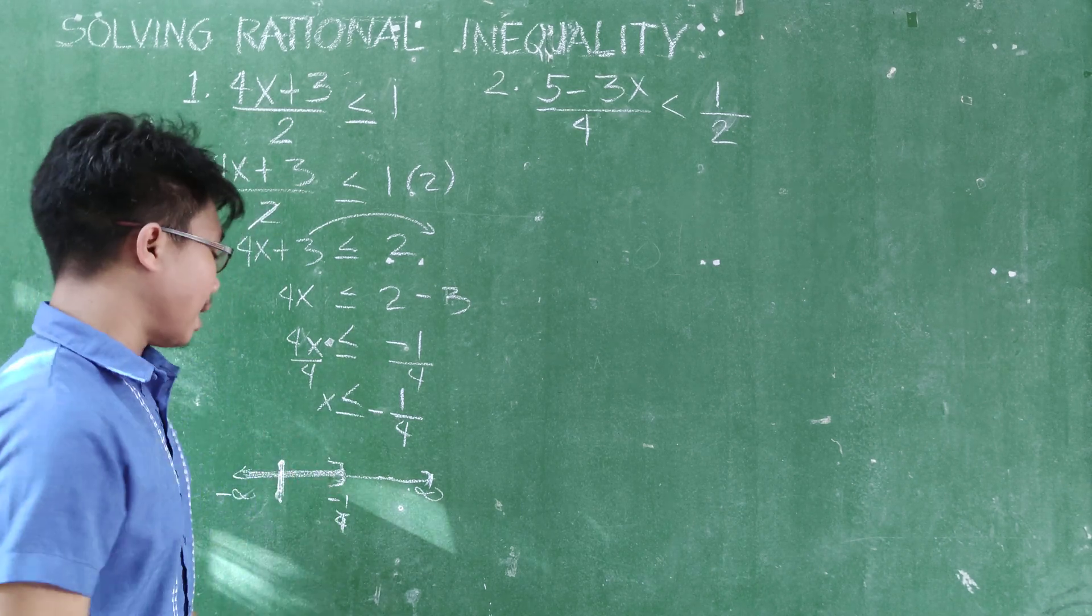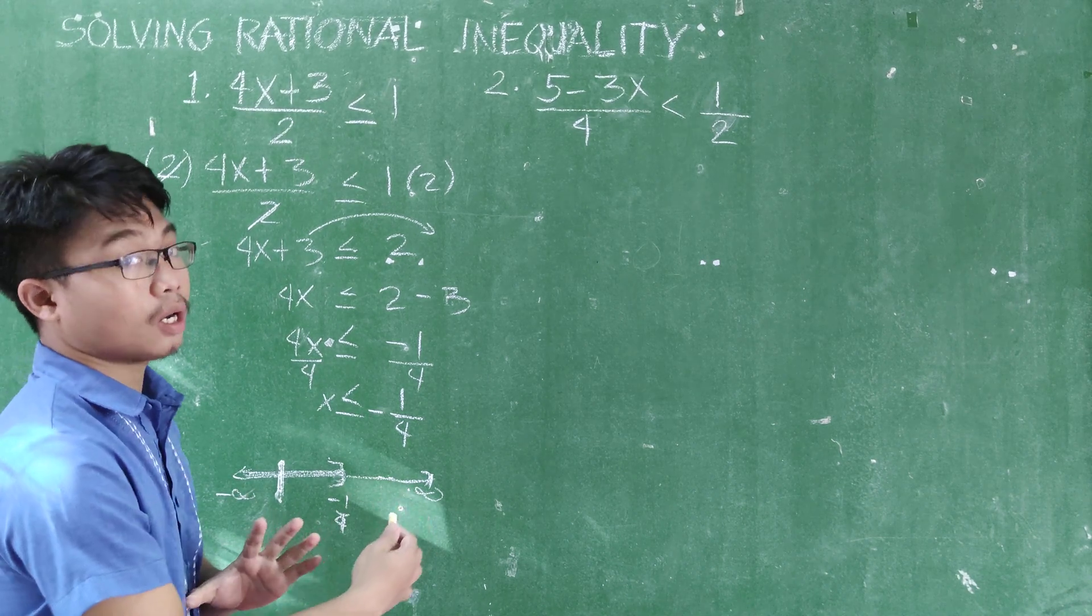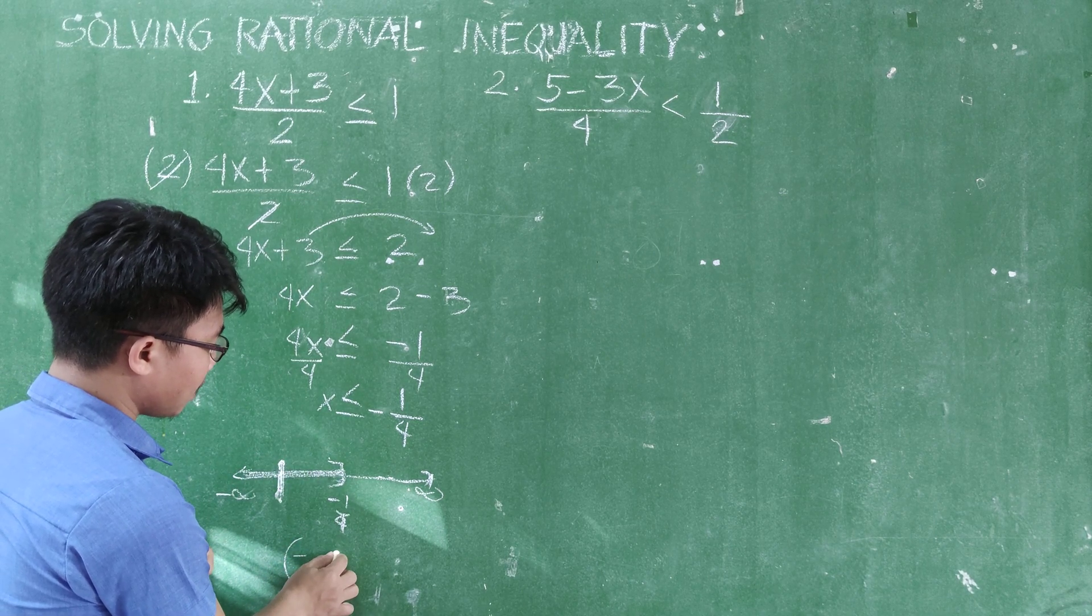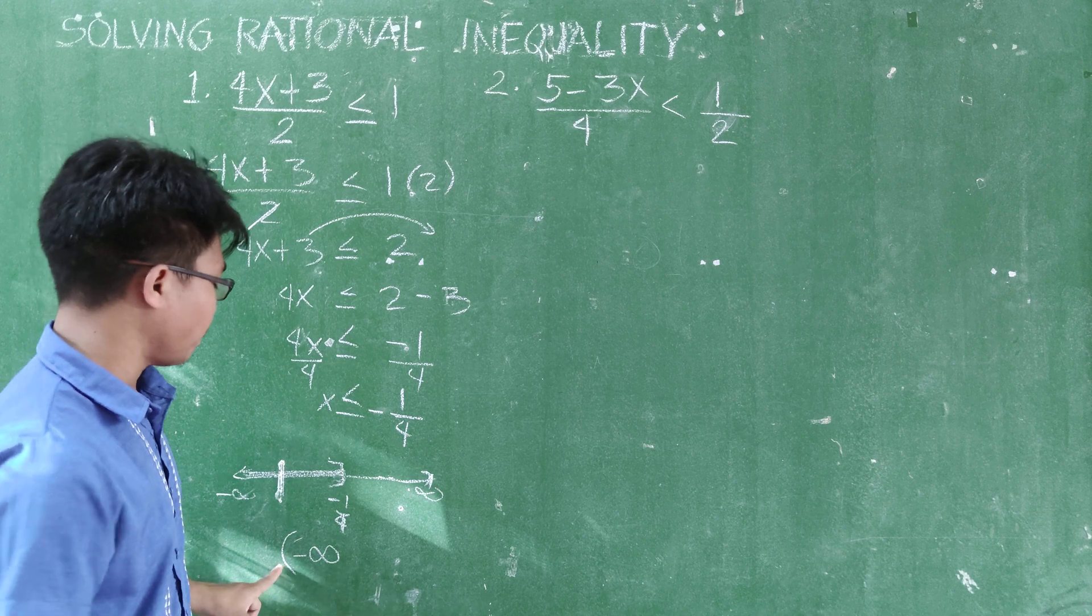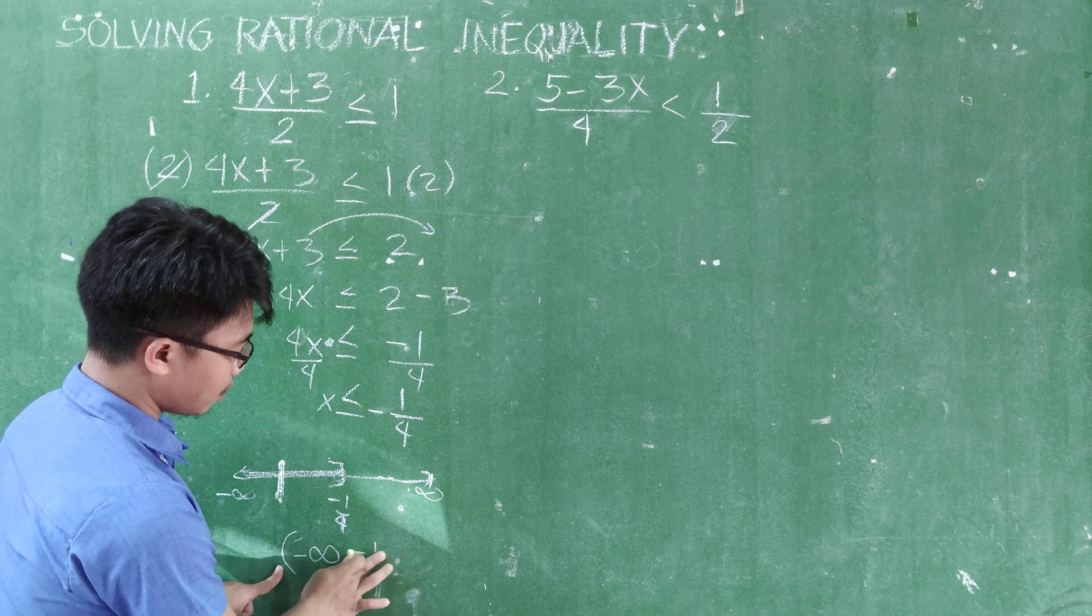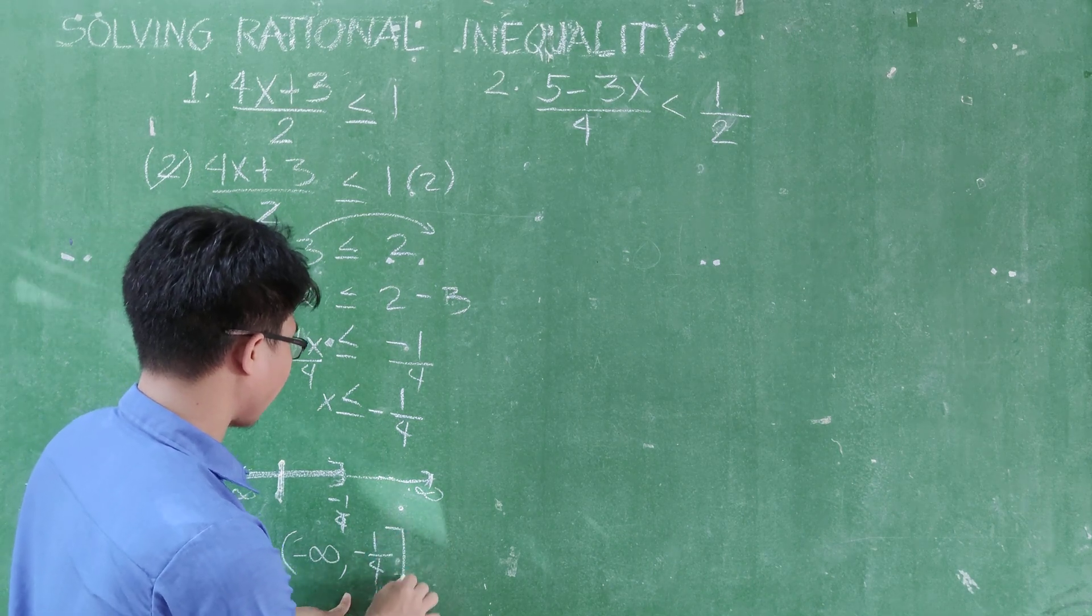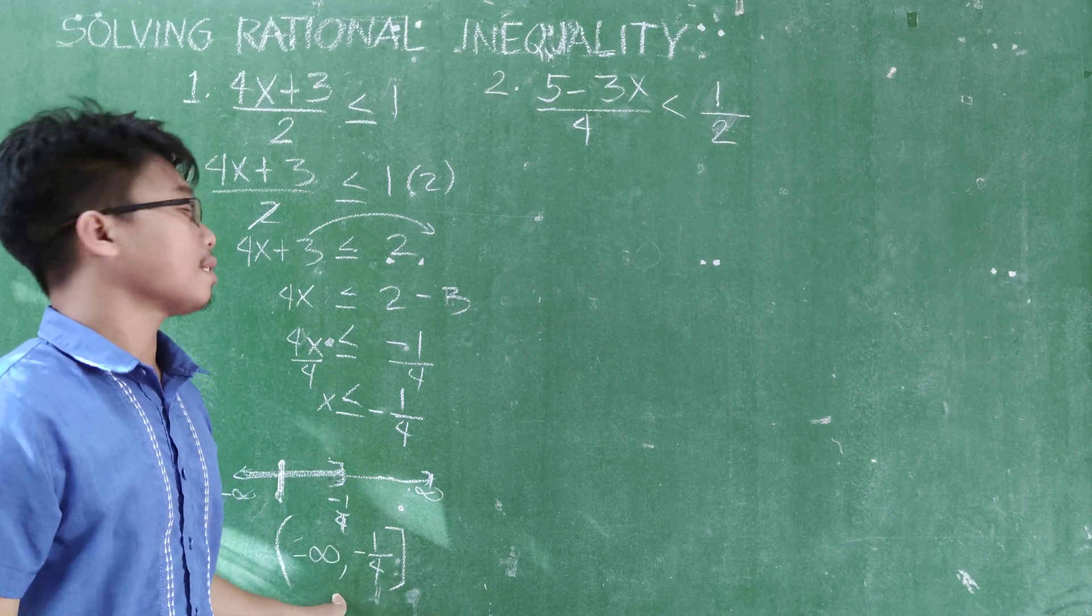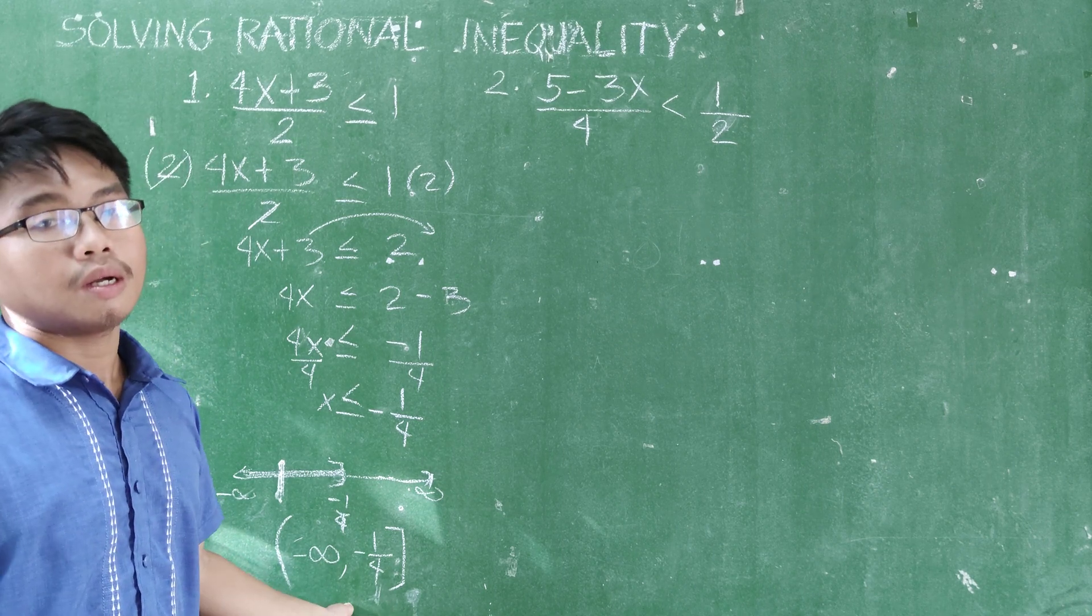For interval notation, you can express your answer by doing this. So since you're coming from negative infinity, also mind you guys, always what's on the left side is the smaller. So coming from negative infinity, this is how it's written. And parenthesis, going to negative 1/4. Since it's included, you are going to use bracket. So this is how you express your answer in interval notation. Or this is read as half closed interval from negative infinity to negative 1/4.